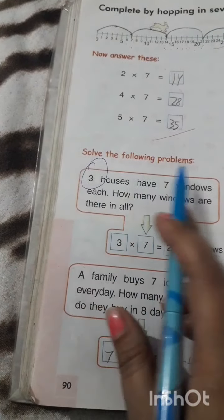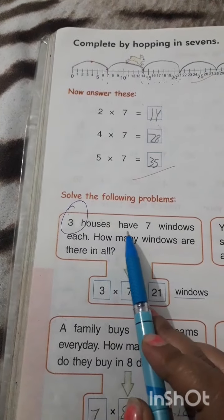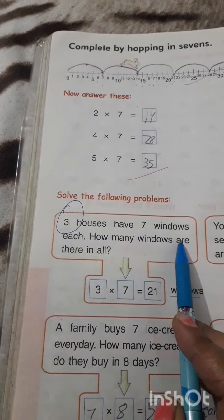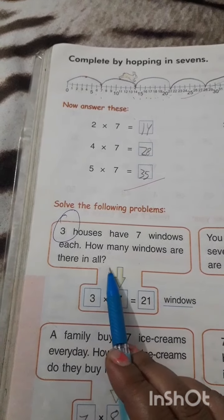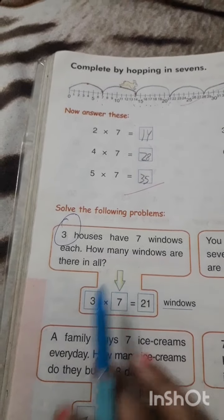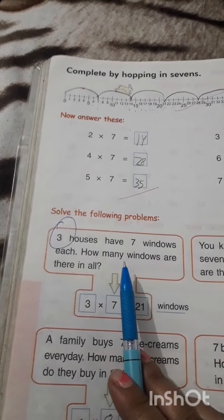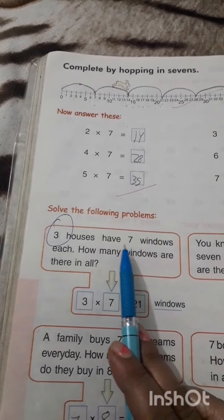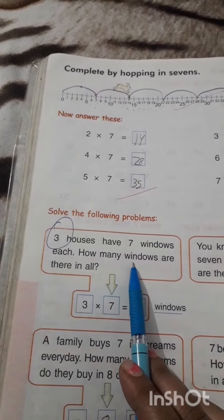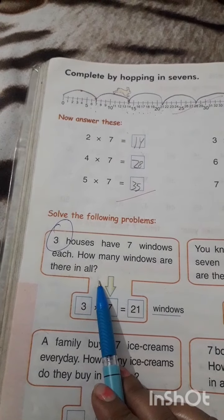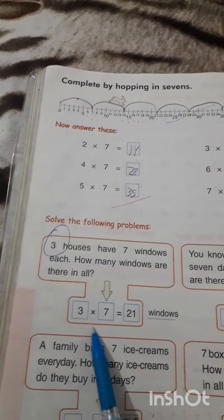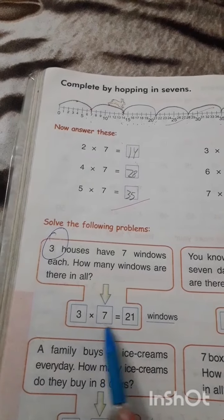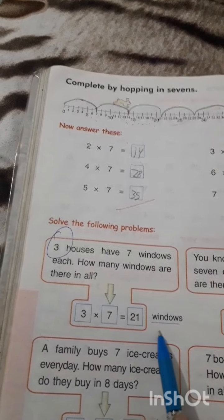Solve the following problems. 3 houses have 7 windows. 3 multiply 7. 3 times 7. 3 7s are 21. 21 windows.